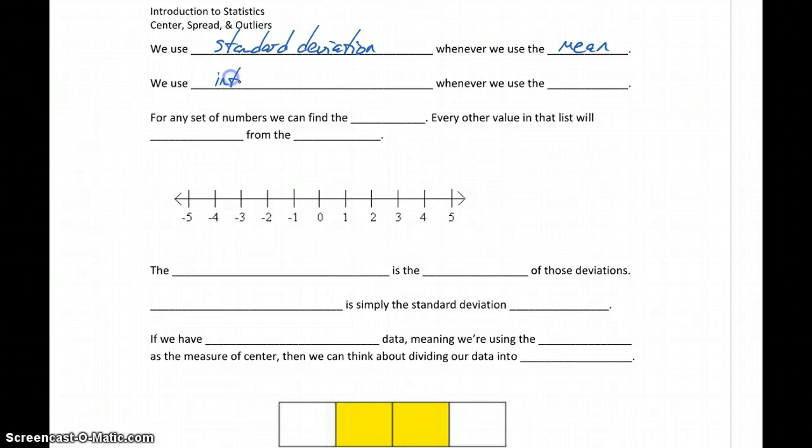We use the interquartile range any time we have to use the median. So whenever our data is highly skewed, we use the median as our measure of center, and interquartile range will give us our measure of variation, our measure of spread.